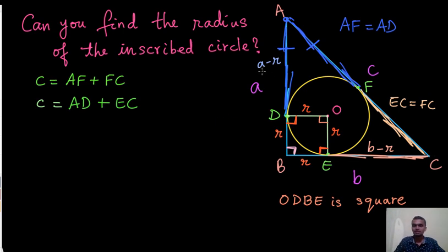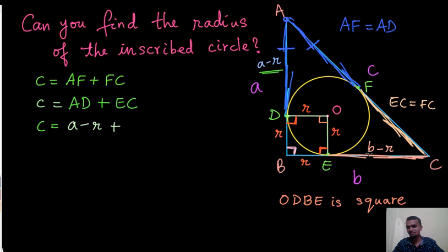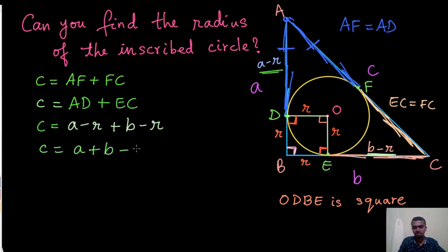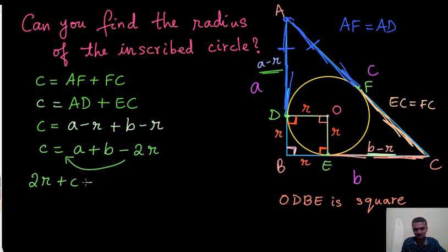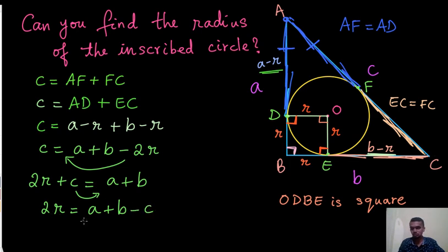From the figure, AD is A minus R and EC is B minus R. So C equals (A minus R) plus (B minus R), which simplifies to C equals A plus B minus 2R. Bringing minus 2R to the left side gives 2R plus C equals A plus B. Shifting C to the other side gives 2R equals A plus B minus C. Dividing by 2, the radius of the circle equals (A plus B minus C) divided by 2.